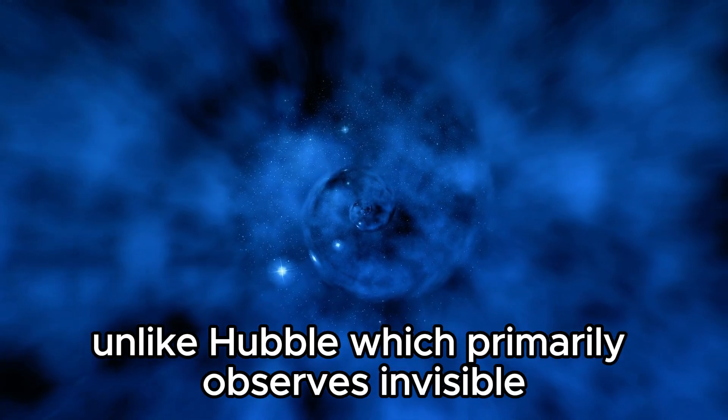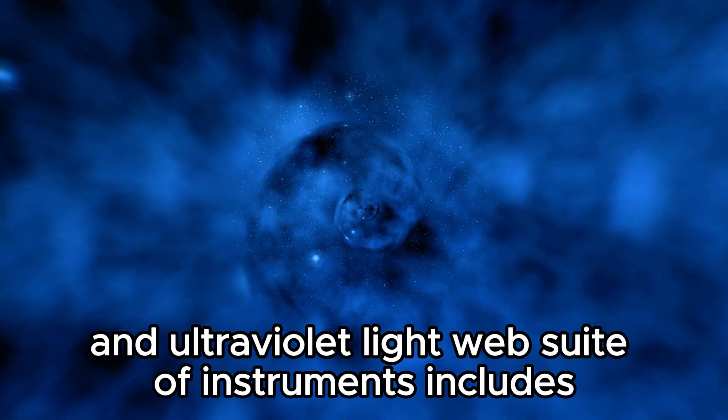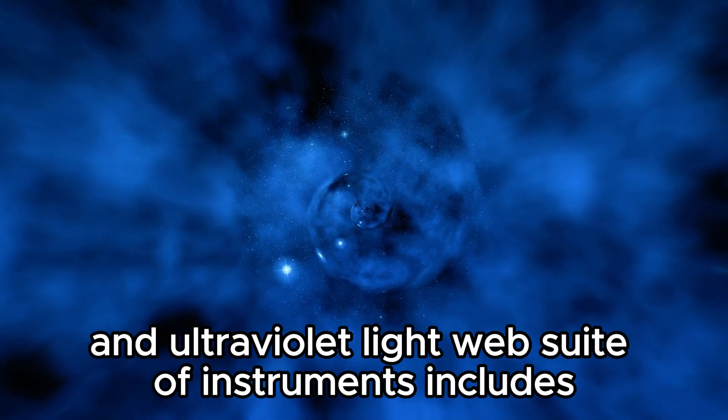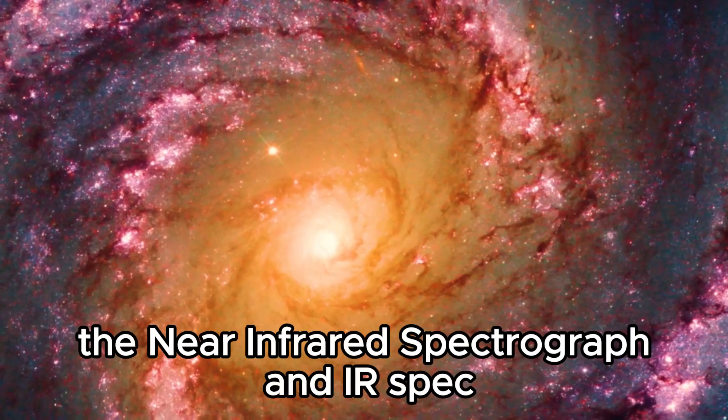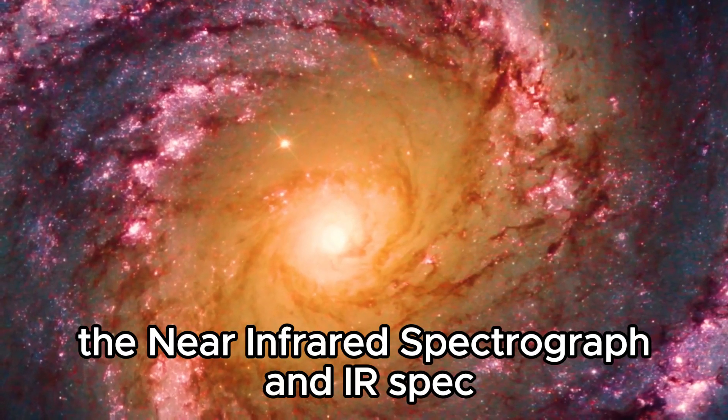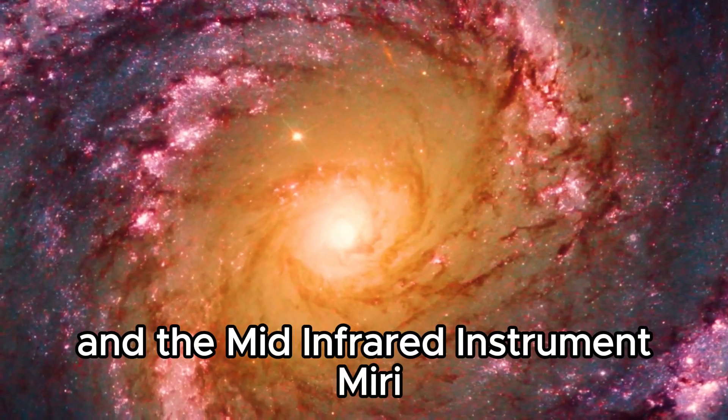Unlike Hubble, which primarily observes in visible and ultraviolet light, Webb's suite of instruments includes the near-infrared camera, NIRCam, the near-infrared spectrograph, NIRSpec, and the mid-infrared instrument, MIRI.